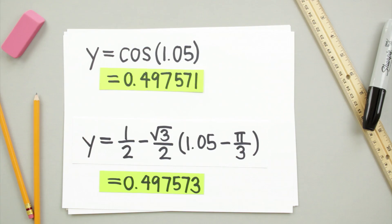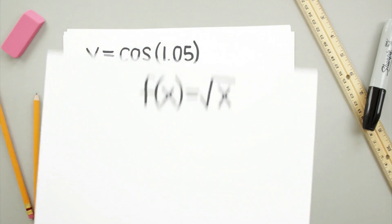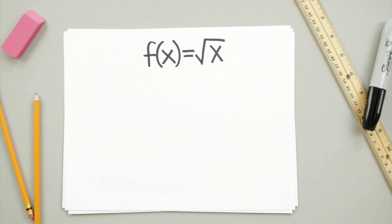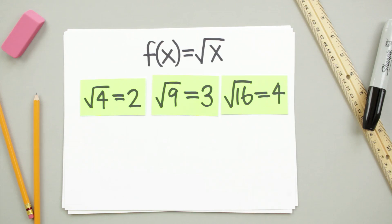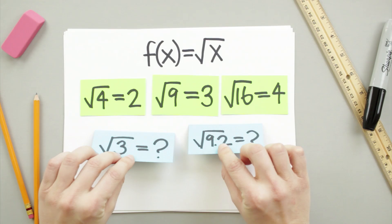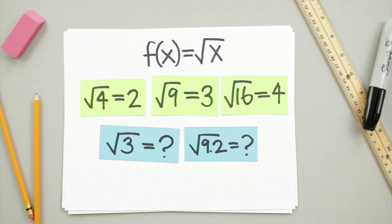For example, linear approximation can be really helpful when we're trying to estimate square roots since we already know lots of other square roots like the square root of 4, 9, 16, and so on, but we don't really know how to take the square roots of numbers that aren't perfectly square like 3 or 9.2.